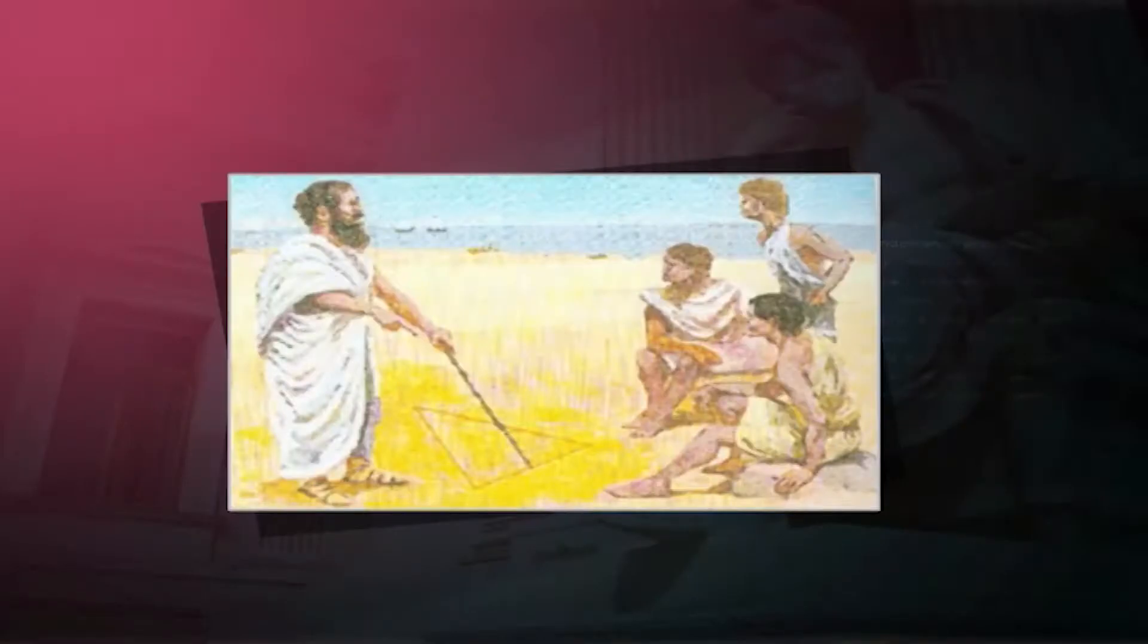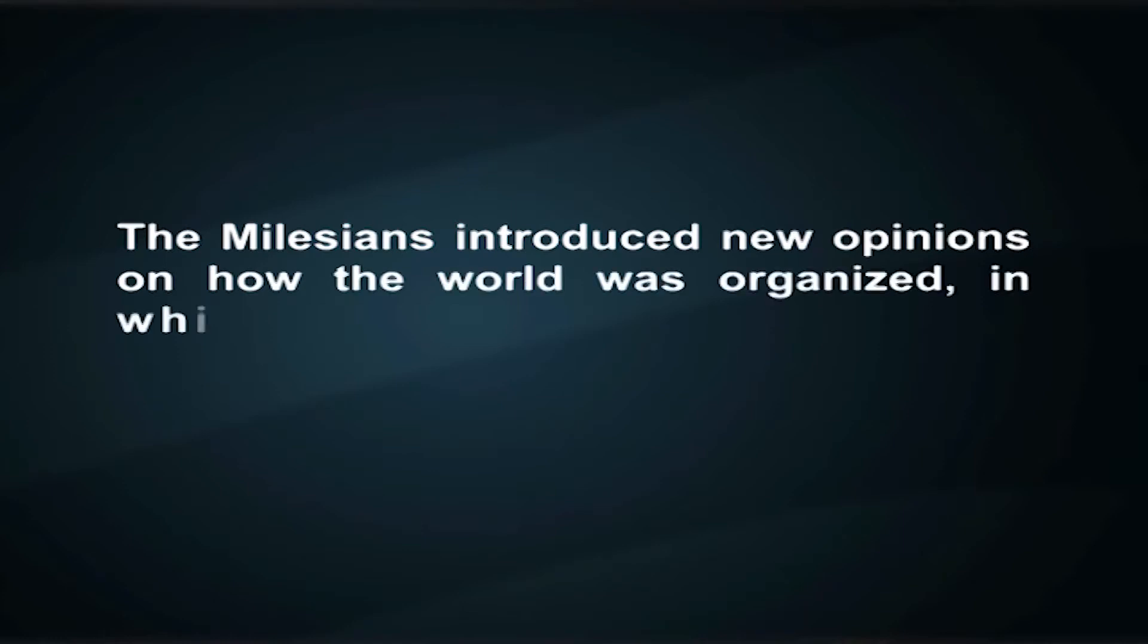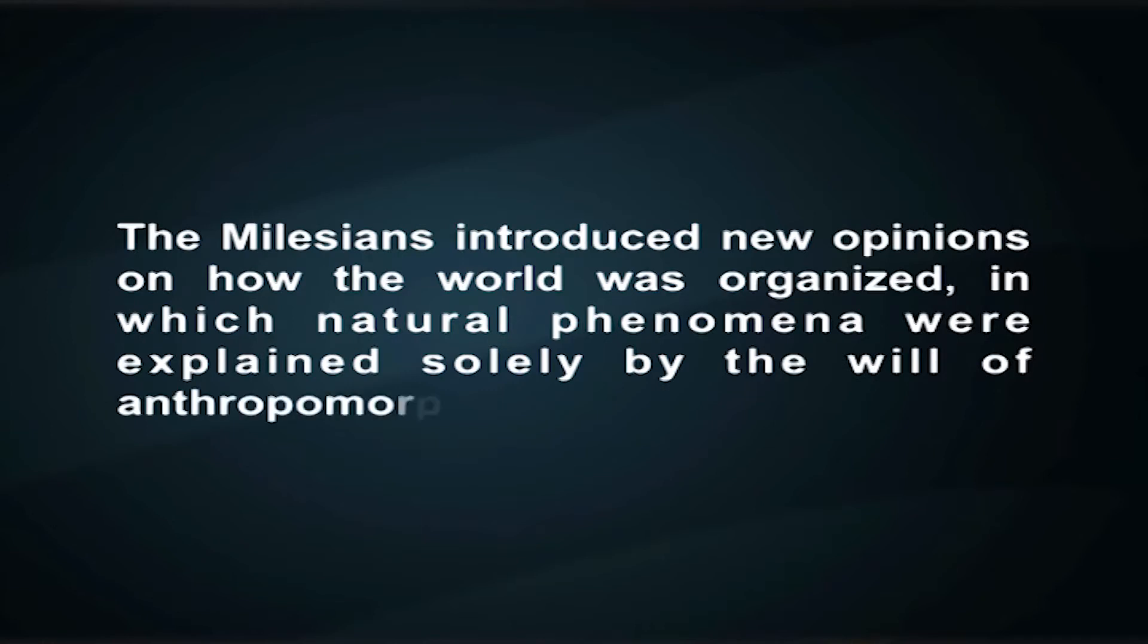The Milesian School is an early Pre-Socratic school of philosophy founded in the 6th century BC in the Ionian town of Miletus. The major philosophers included under this label are Thales, Anaximander, and Anaximenes, who held quite distinct views on most subjects, so that the grouping is more one of geographical convenience than one of shared opinions. The Milesians were also more focused on nature than on reason and thought. Like the later Ionians, the Milesians introduced new opinions on how the world was organized in which natural phenomena were explained solely by the will of anthropomorphized gods.